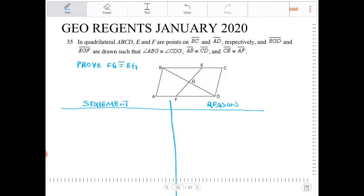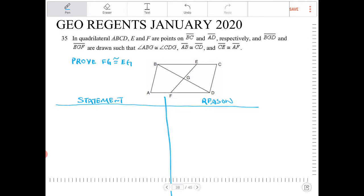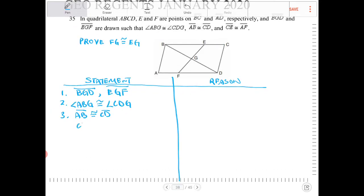So here it says that BGD and EGF are straight lines. That is important. And then it says ABG is congruent to CDG, and AB is congruent to CD, and CE is congruent to AF. Okay, and these are all our givens.